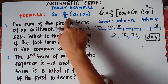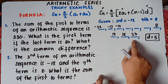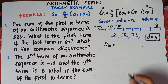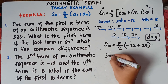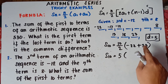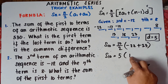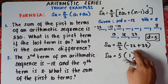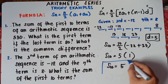Now we can use the formula: S sub 10 equals 10 divided by 2, times quantity negative 22 plus 23. That gives 5 times 1, since 23 minus 22 equals 1 and 23 is larger so the sign is positive. Therefore S sub 10 equals 5. The sum of the first 10 terms is 5.